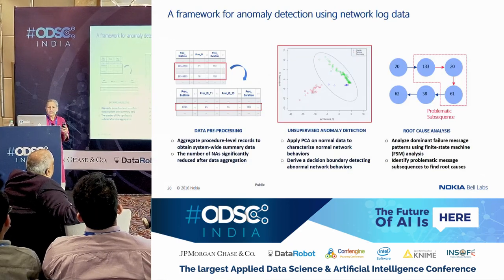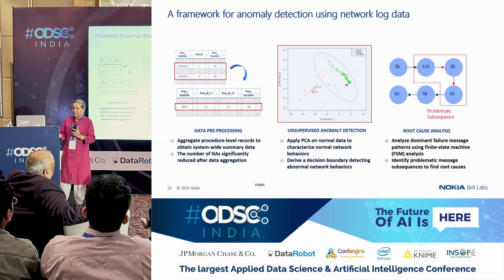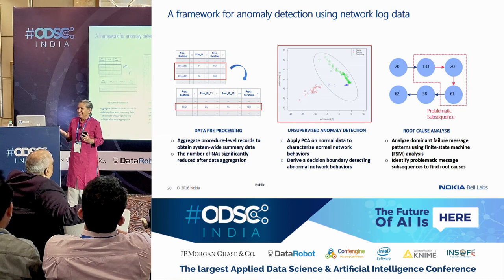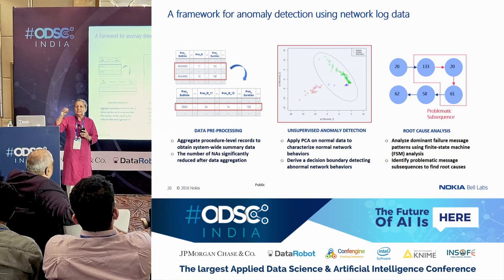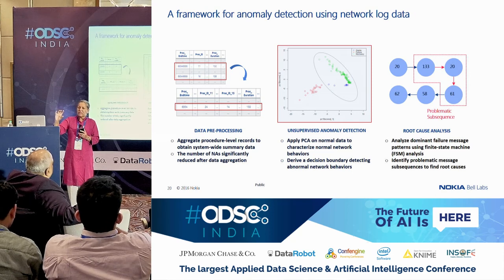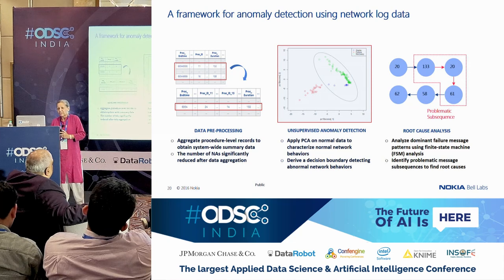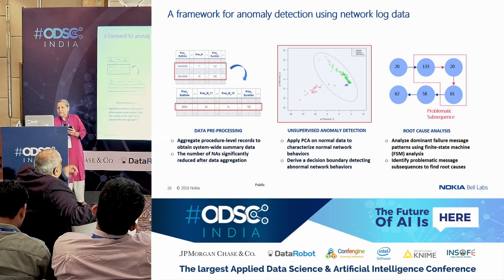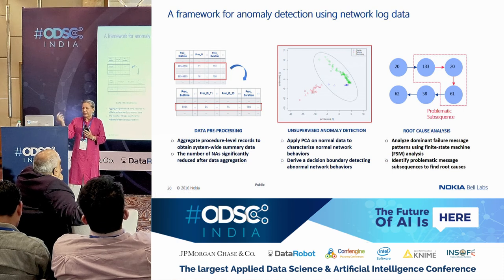Here's our framework. Data pre-processing takes a lot of time. We first aggregated the records — these are generated at millisecond level — into 10-second chunks, so each chunk becomes one observation. This also helped reduce the number of NAs. Then we applied PCA — principal component analysis — on the normal data to characterize it, developed the model, and then applied it to new incoming data.